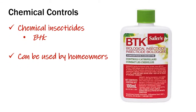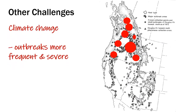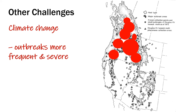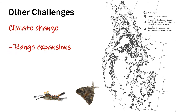Another challenge comes from climate change. As our climate changes, it may become easier for the tussock moth eggs to survive winter, which could increase the frequency and intensity of outbreaks. A changing climate may also allow for range expansion, which means it's harder to predict where a future outbreak may occur.